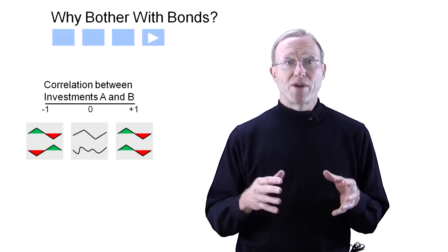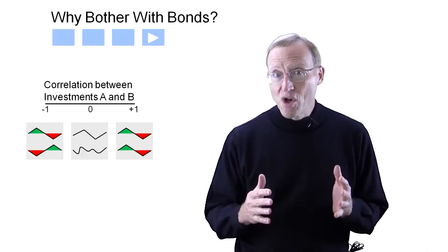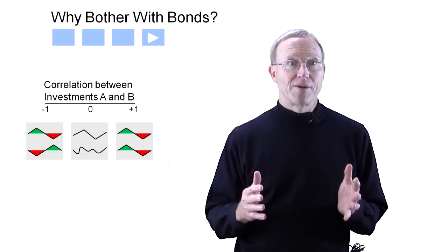Correlation is a measure of whether stocks and bonds move together or independently from each other. Ideally, we would find two investments that had attractive average returns, but where one had a good year exactly when the other had a bad year. On a scale of minus 1 to 1, these would be very negatively correlated, but unfortunately they only exist in our dreams.